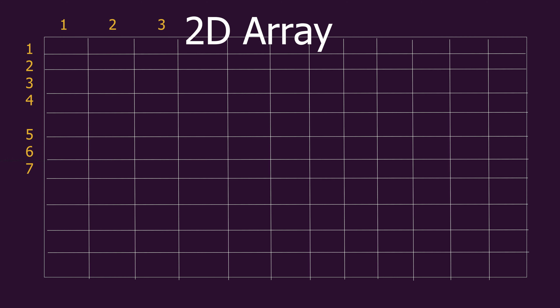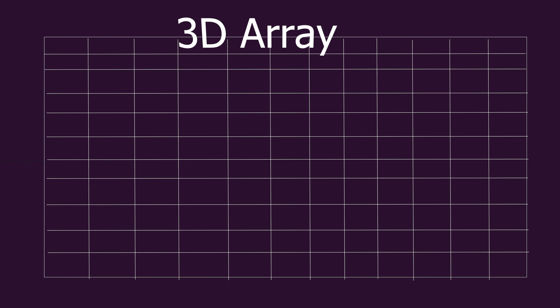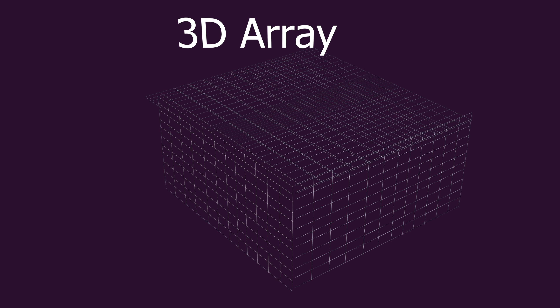You can use two numbers to find the location of a cell in a 2D array. Arrays can get much more complicated — each cell can hold its own array. A nested array is called a 3D array, and you use three numbers to find a cell. 4D arrays exist too: imagine an infinite number of infinite cubes, where the extra number tells you which cube you're in. Any level of array exists, even a 135D array.